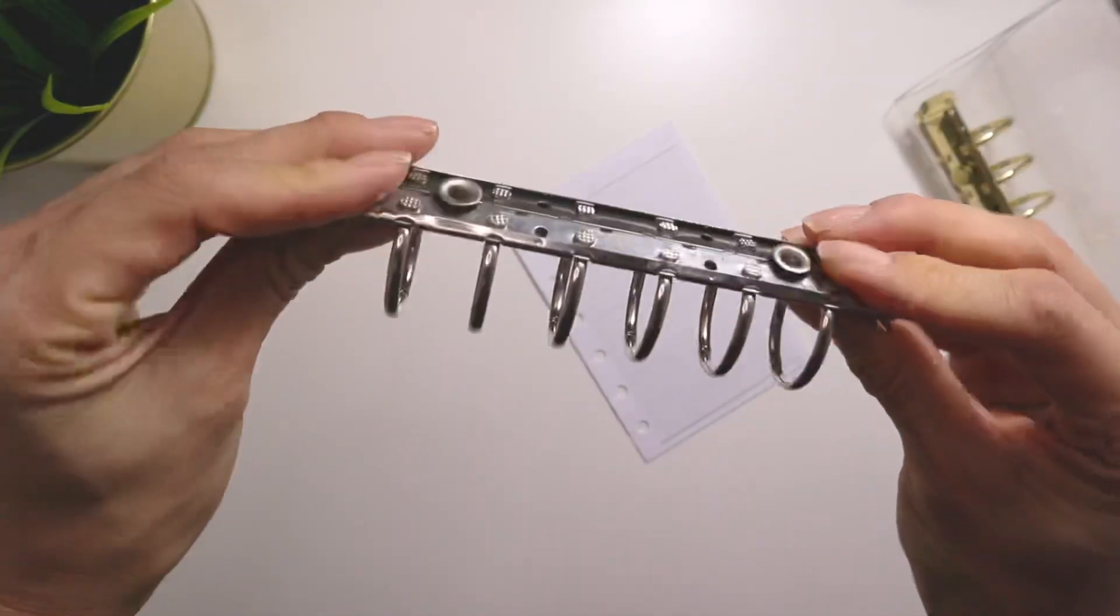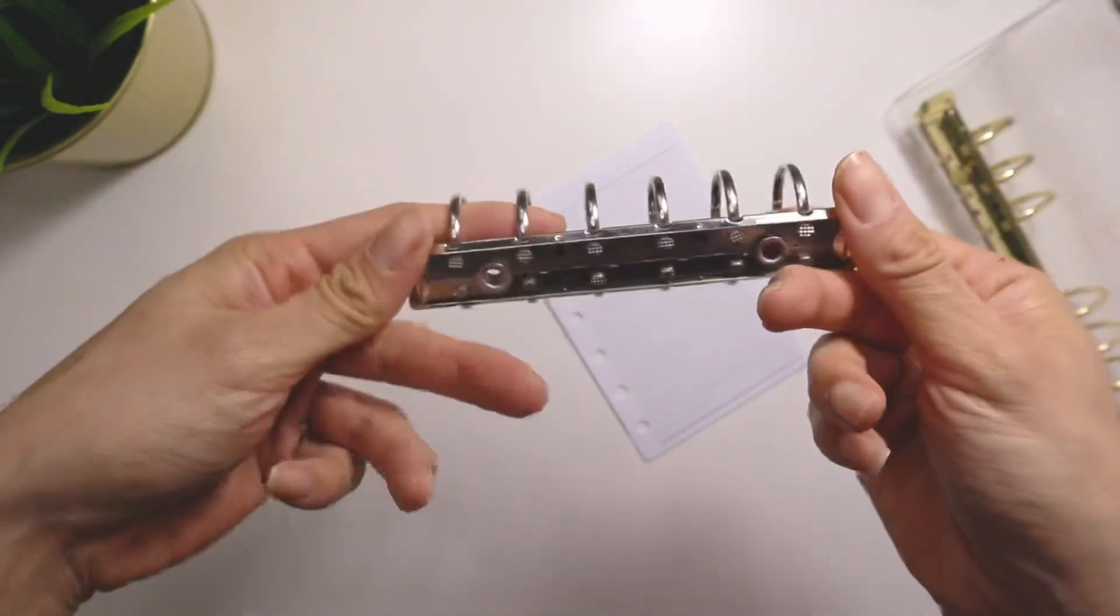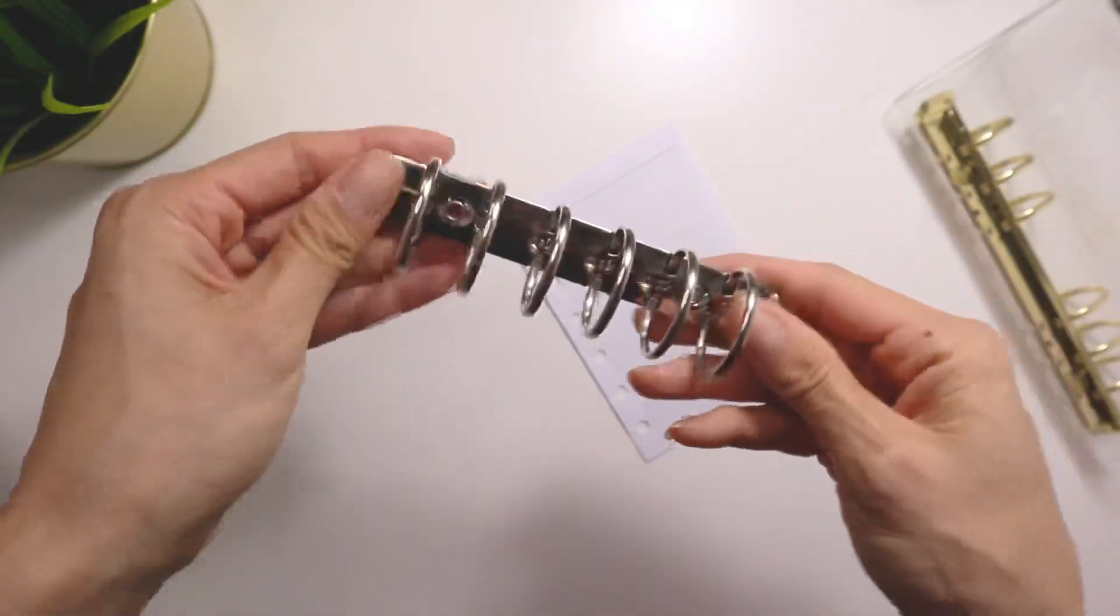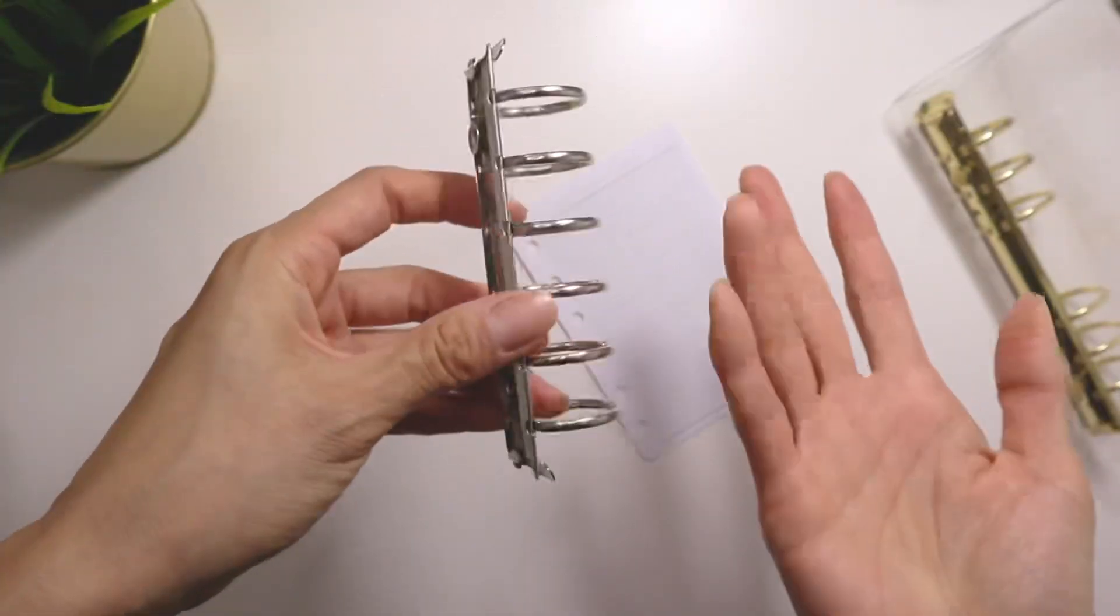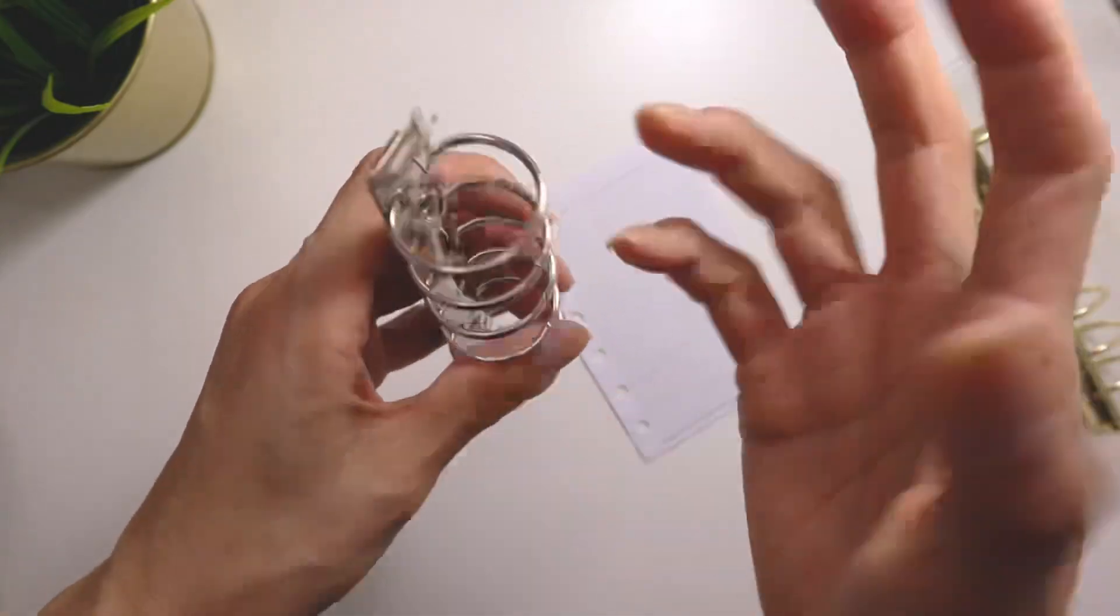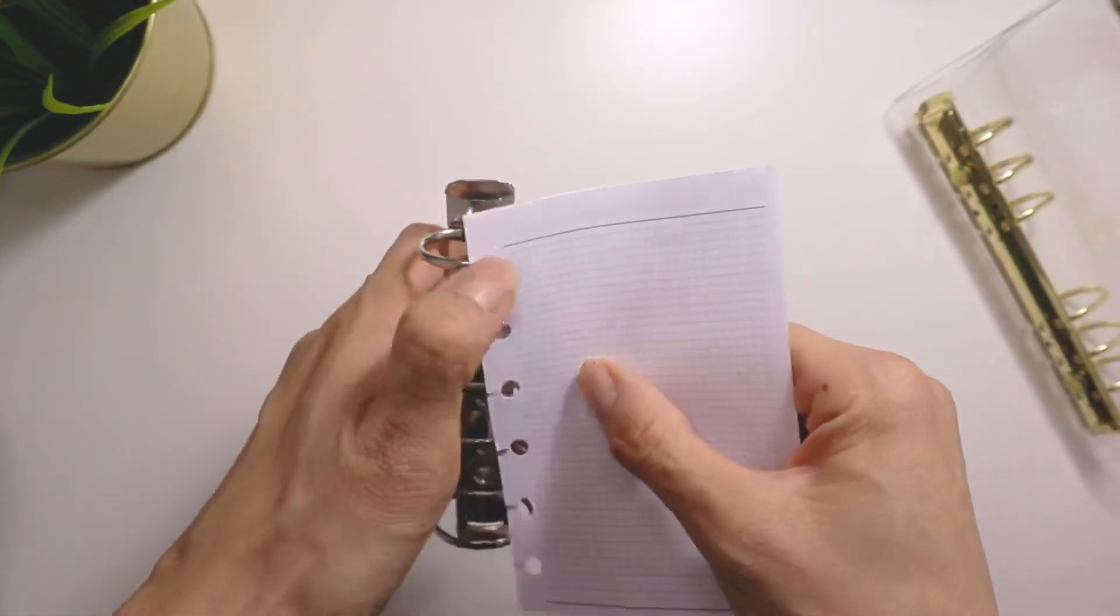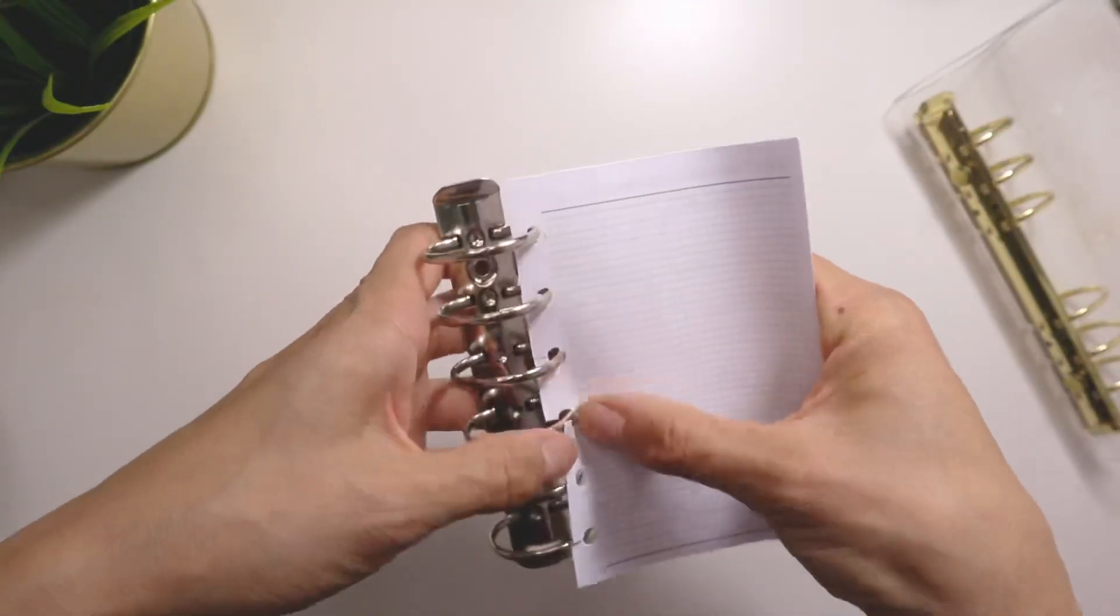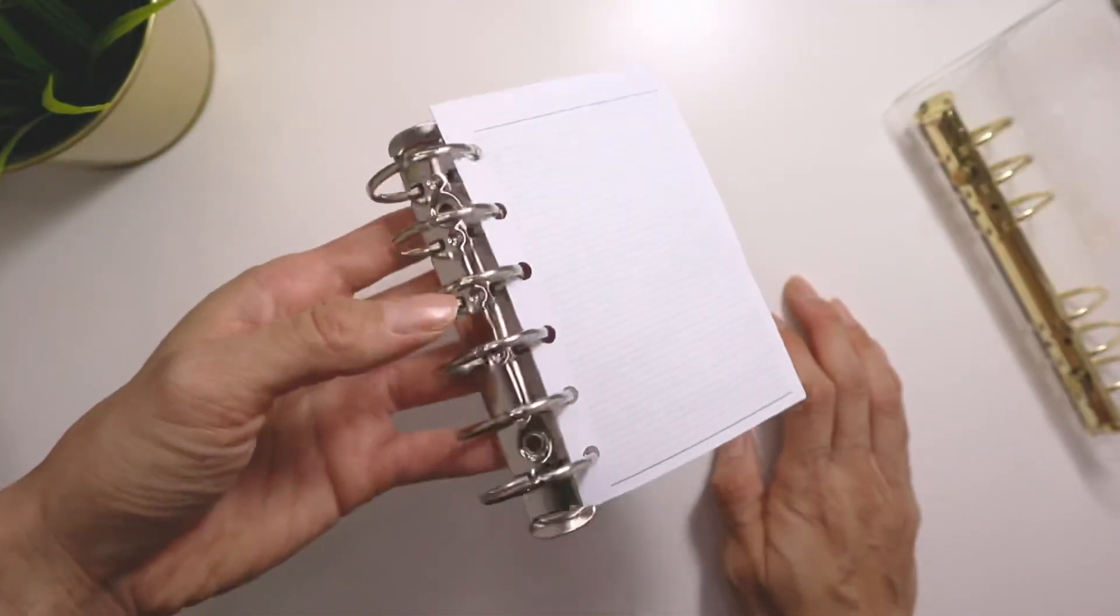The third one I had is this. So this, for those of you who have got Moterm planners, which I'm sure is most of you, is just the ring mechanisms that you can get. And I don't know about you guys. But for me, I have a bunch of extras of these because I buy them different colors, different sizes and whatnot. And so you can obviously use these and just not have like the planner cover, but just use that to store a set of inserts.